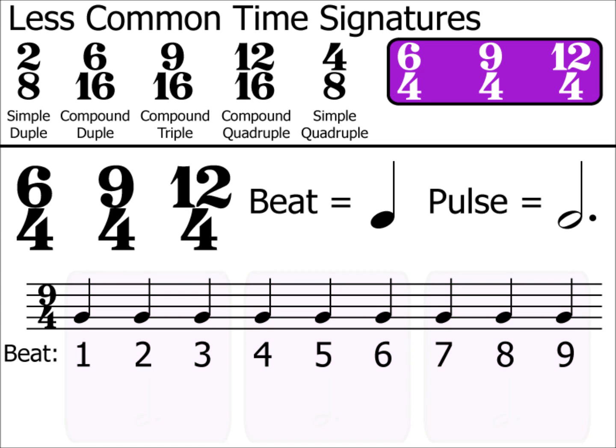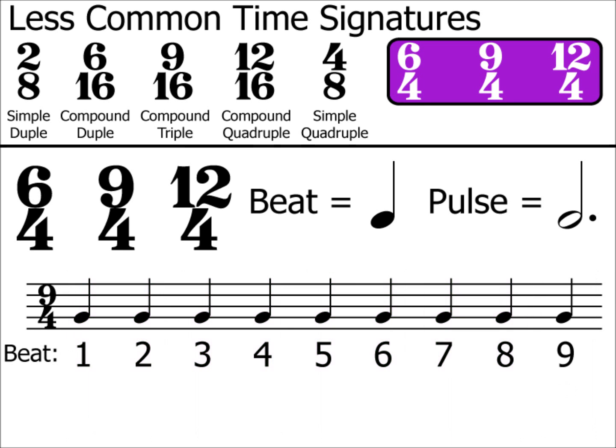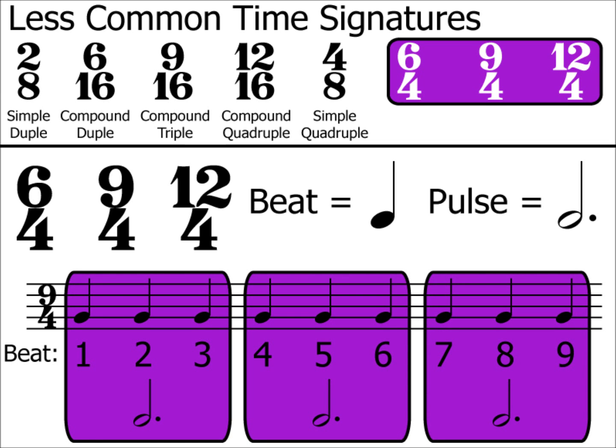Now you might ask, why does the pulse fall on beats 1, 4 and 7? Well, if it fell on every other beat — so 1, 3, 5, 7 — we'd have an odd beat at the end, beat 9. There must always be an equal number of pulses per bar — that is, until we get to irregular time signatures, more of those in part 4. Even counting in 4s, we'd have an odd beat at the end. So the pulse falls every 3 beats, making the bar made up of dotted minim pulses.